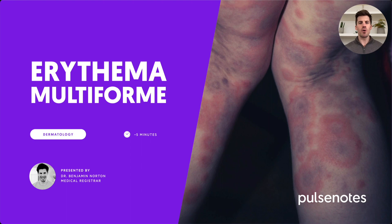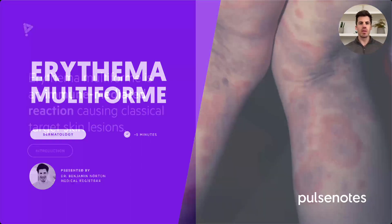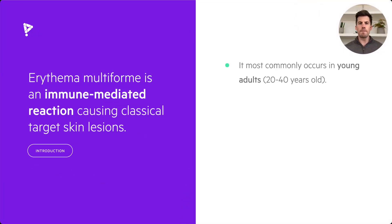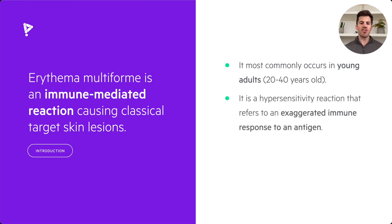Hi, it's Ben from Pulse Notes and today we'll be looking at Erythema Multiforme. Erythema Multiforme is an immune-mediated reaction causing classical target skin lesions. It most commonly occurs in young adults 20 to 40 years old. It's a type of hypersensitivity reaction that essentially refers to an exaggerated immune response to an antigen.